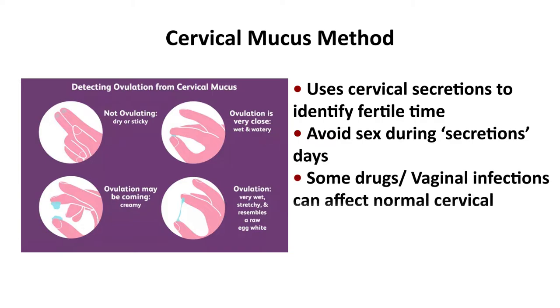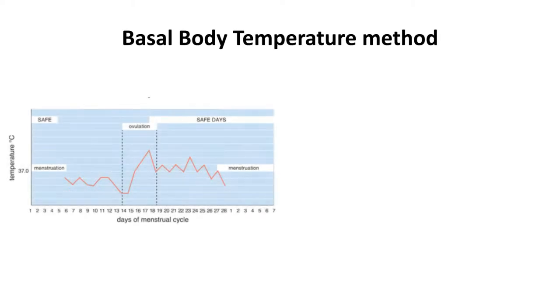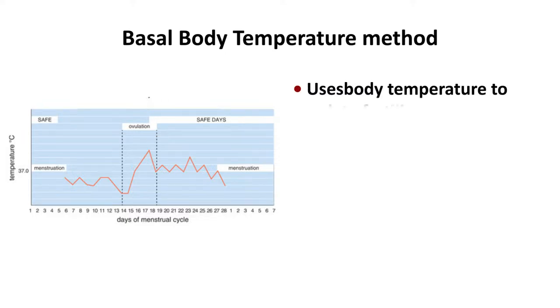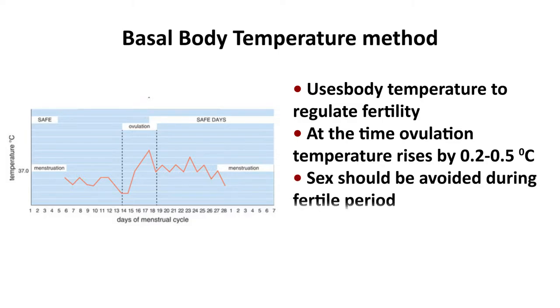Some drugs and vaginal infections can affect the normal cervical secretion pattern. The third fertility awareness-based method is the basal body temperature method, which uses body temperature to regulate fertility. At the time of ovulation, temperature rises by 0.2 to 0.5 degrees Celsius, and sex should be avoided during the fertile period.